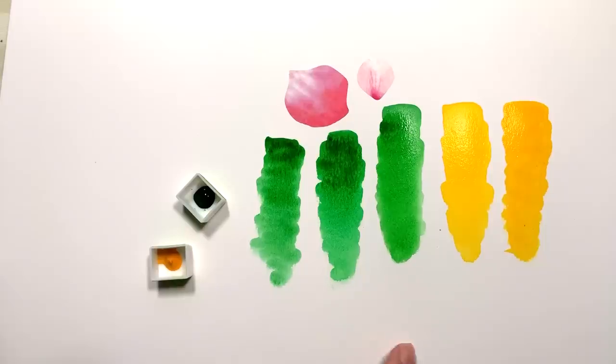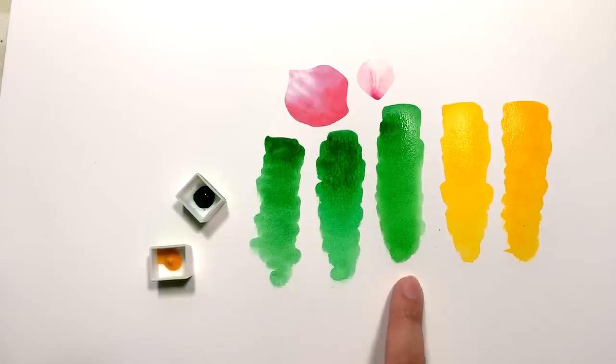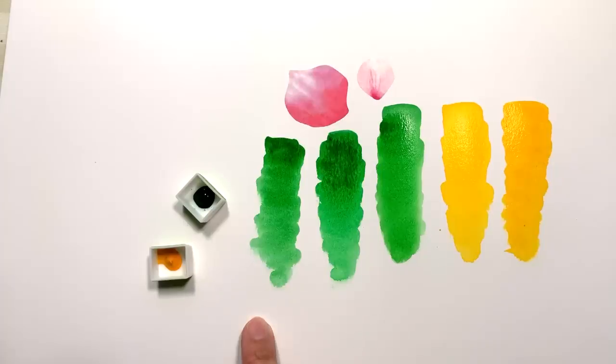I might have to invest in Daniel Smith's current hookers greens just so that I can have a comparison between this and the new one. But as you can see, this is Daniel Smith's old recipe with the genuine PO49. This is Holbein's and this is Sennelier's.